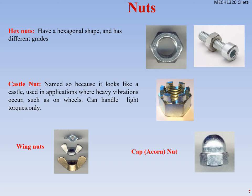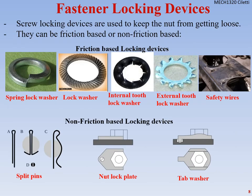Wing nuts allow quick hand tightening — on our CNC mill we use wing nuts to quickly clamp things down. We also have cap or acorn nuts, which cover the exposed end of the bolt for safety. For example, on a swing set you'd put cap nuts on so no one cuts themselves on a protruding bolt end.